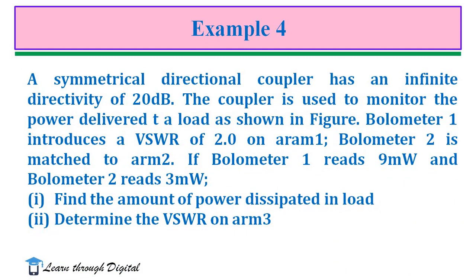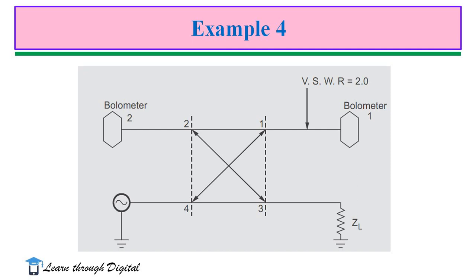The fourth example: a symmetrical directional coupler has a directivity of 20 dB. The coupler is used to monitor the power delivered to a load. Bolometer 1 introduces a VSWR of 2.0 on port 1, and Bolometer 2 is matched to port 2. If Bolometer 1 reads 9 mW and Bolometer 2 reads 3 mW, find the power dissipated in the load and the VSWR on port 3. We mark ports 1, 2, 3, and 4.